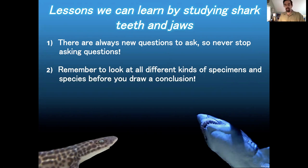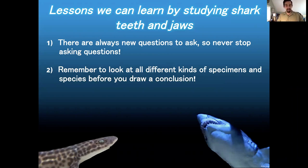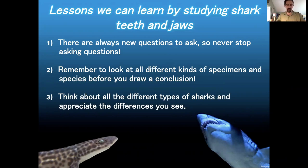Also remember to look at all different kinds of specimens and species before you draw a conclusion. The world's a big place, there are lots of different types of animals. Don't draw a conclusion based on one shark — look at the biodiversity. There are more than 500 living species of sharks. Differences are great — it makes science interesting. With that, I'll wrap up and turn it over for questions.